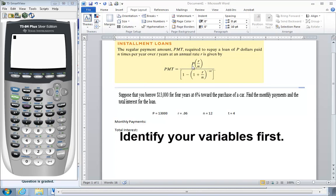The first thing we want to do is identify our variables from the problem. 13,000 represents the principal. R is our interest rate and we have to remember to change it to a decimal.